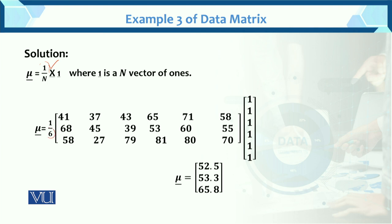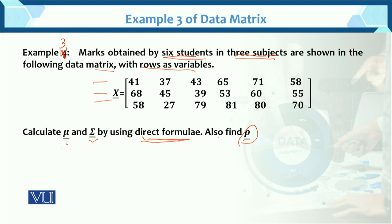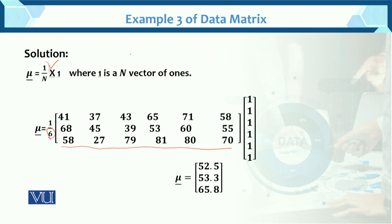Total we have 6 students, and we have 3 subjects, so the data matrix X has dimension 3 into 6. The ones vector 1 has 6 rows and 1 column. So the resulting mean vector will be 3 into 1, meaning 3 rows and 1 column.